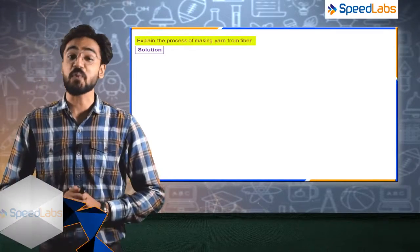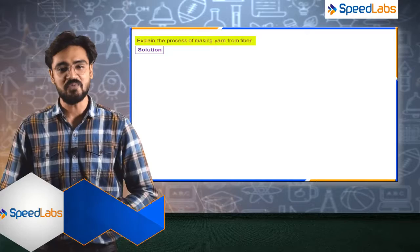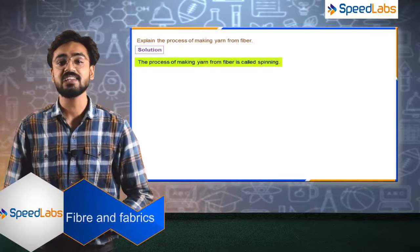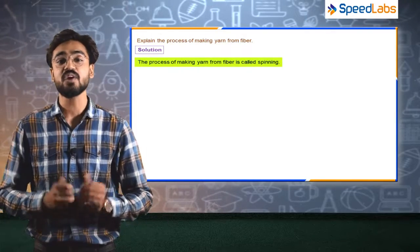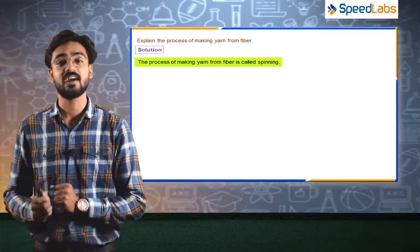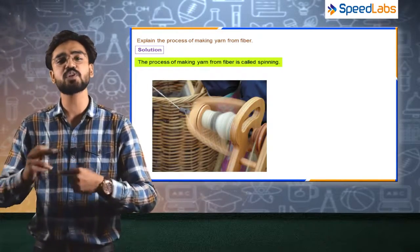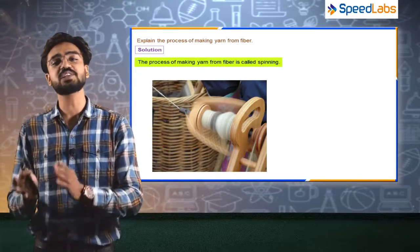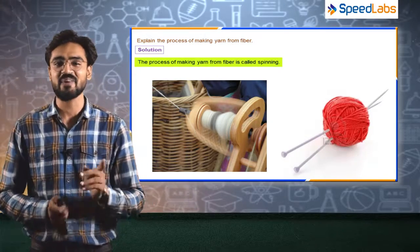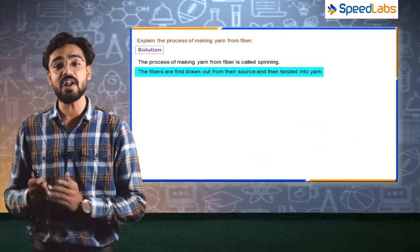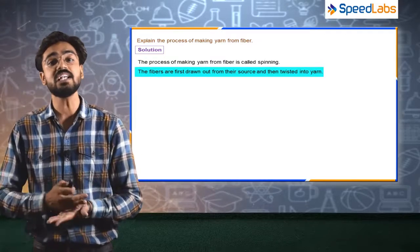Let's discuss the process of making yarn from fiber. The process of making yarn from fiber is called spinning. When you twist fibers together, this process is known as spinning, and this creates yarn. The fibers are first drawn out from their source and then twisted into yarn.